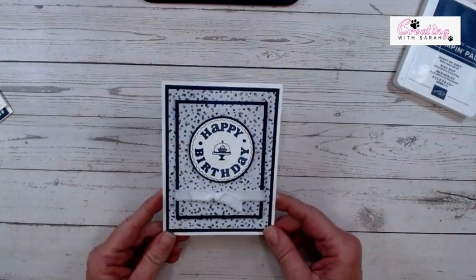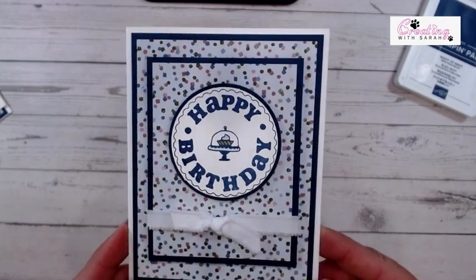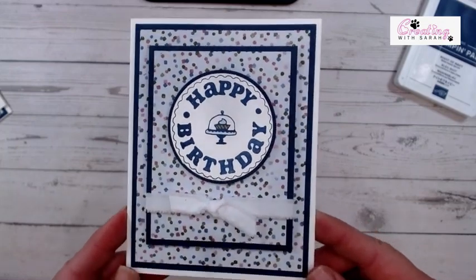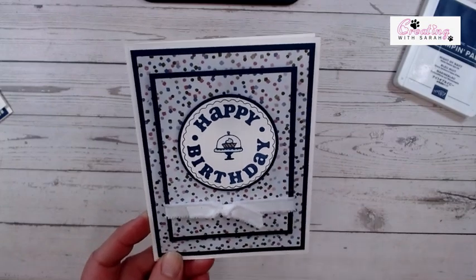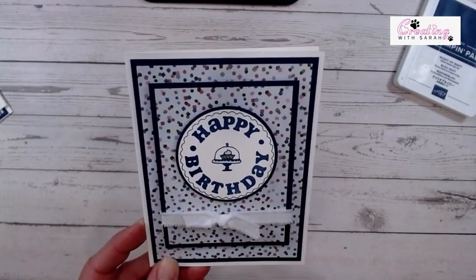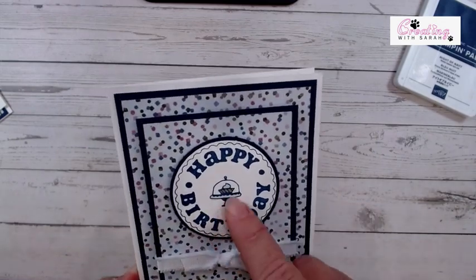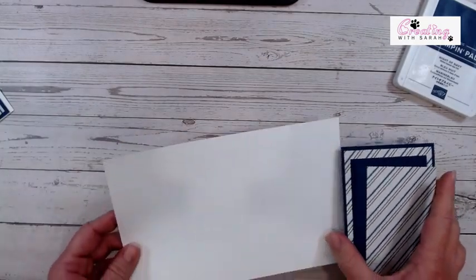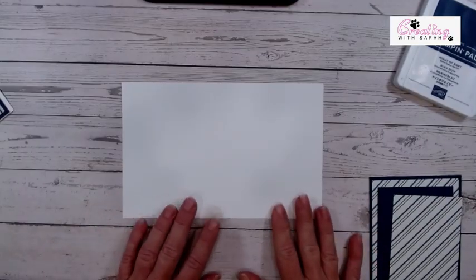So this is the card we're going to be playing with tonight. It is very simple, but it is perfect. It literally does the trick. There isn't Night of Navy in this designer series paper pack, but I really thought the Night of Navy paired super well with the Balmy Blue. So that is what I chose to do on this. And I colored the little cupcake as well.